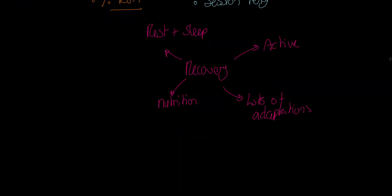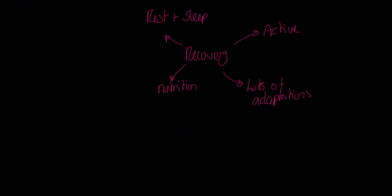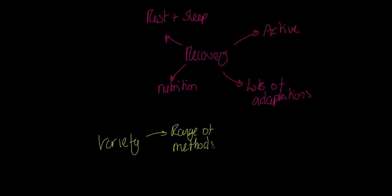The next principle is variety — sometimes referred to as type or variance. What we want to see is that a person is using a range of training methods. We saw with Sanaya she's doing both continuous and resistance training, which seems reasonable. The other reason for variety is to avoid boredom — the monotony of training can be countered by having more variety in the program.